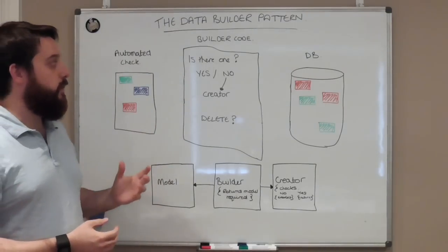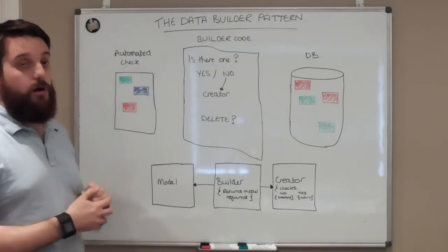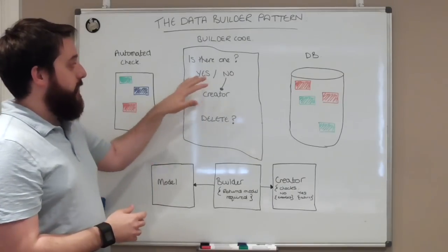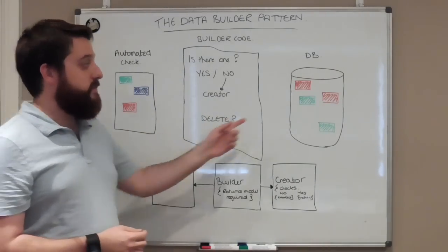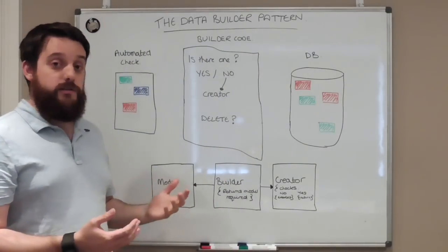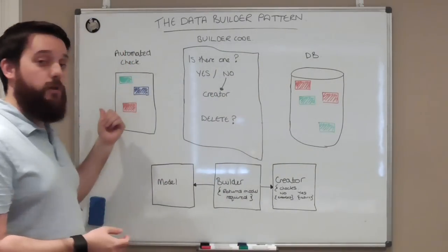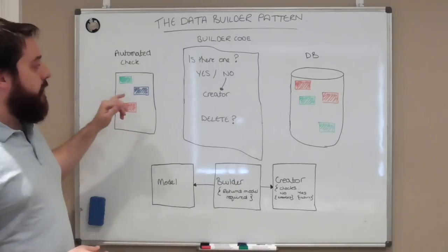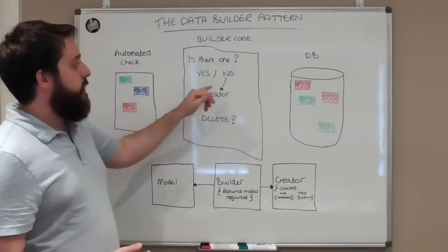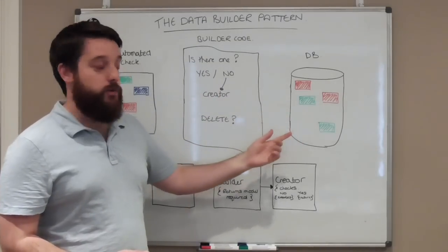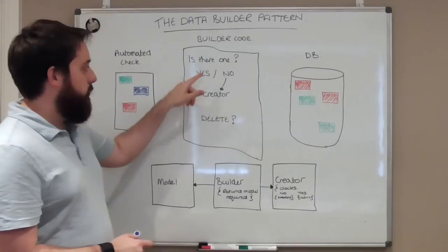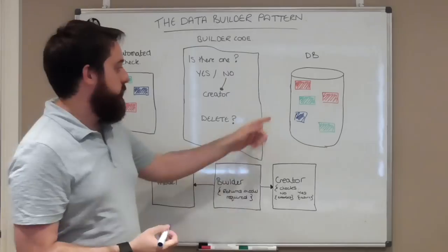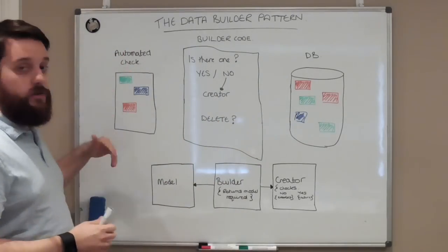What this code does is very simple. It says I need a green block, and it goes to what we'd call the builder code. It checks: is there a green block in the database? If there is, it returns that green block to the automated check to use in execution. If I needed a blue block and there isn't one, it would call the creator code, create a blue block, and return it to my code to run my scenario.